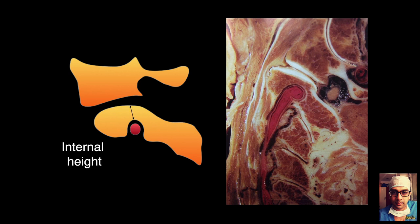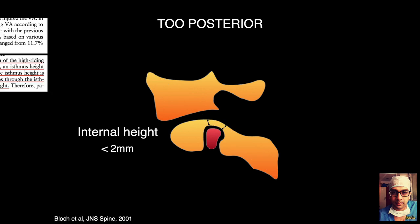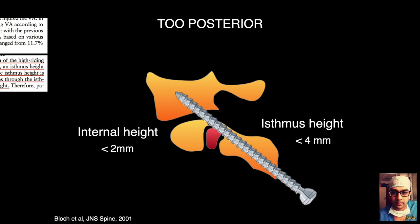There are two key measurements: the internal height, which is the distance of the vertebral artery cave from the top of the superior facet. If the vertebral artery cave is too tall or too high, you can still pass a transarticular screw because there is room behind. But if the vertebral artery cave is too posterior, this makes the isthmus height — or pars width — smaller, and transarticular screws can be dangerous if there is not adequate room.